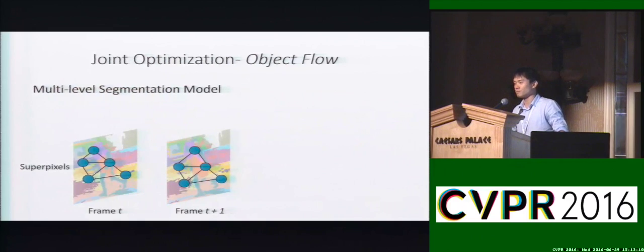Therefore, we propose a joint optimization problem for both the optical flow and segmentation. We call this process object flow.